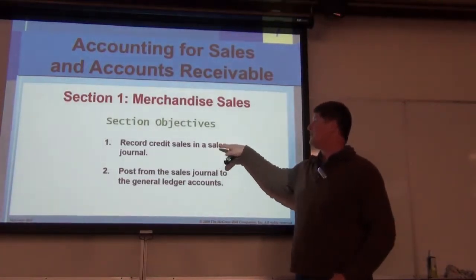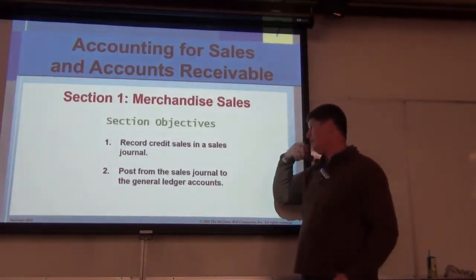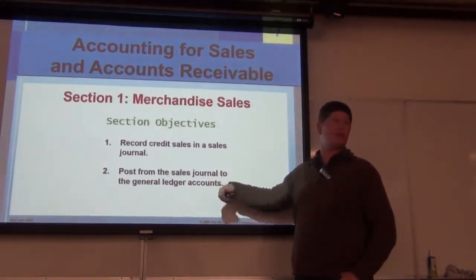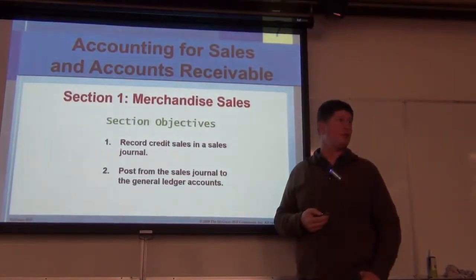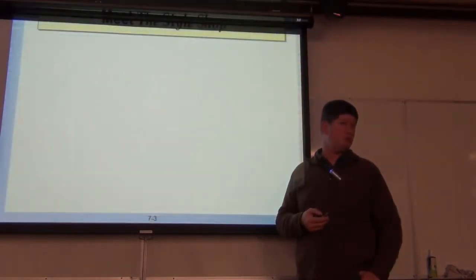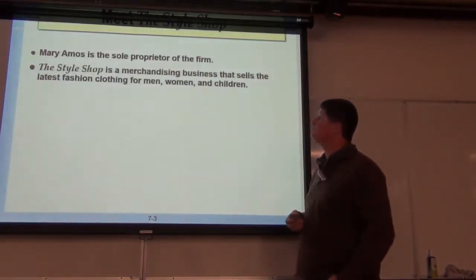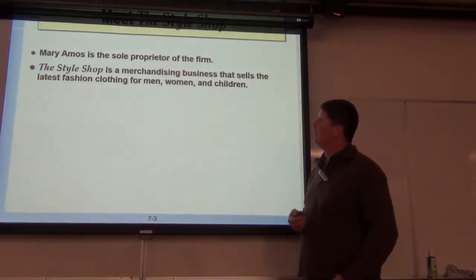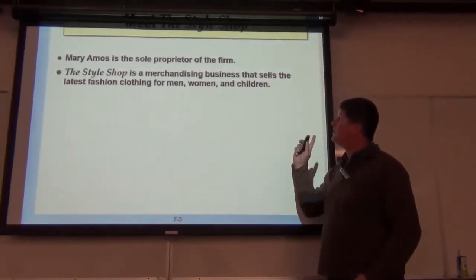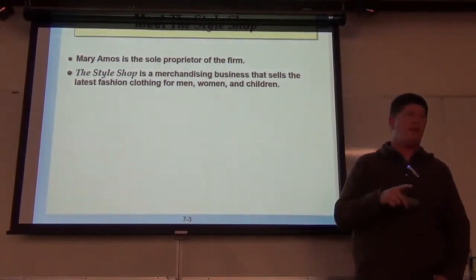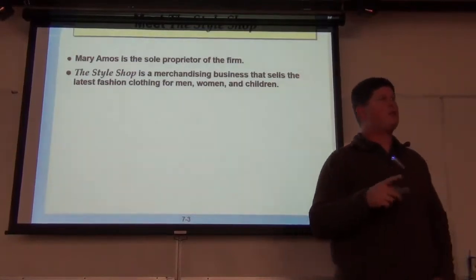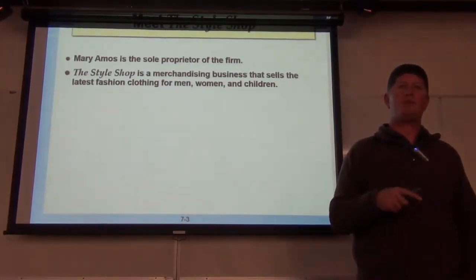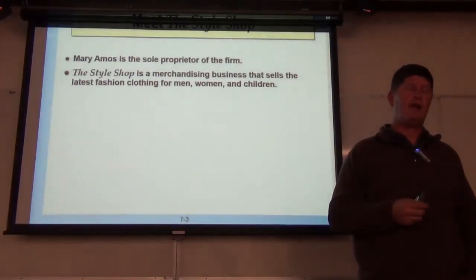We're going to create a sales journal and post from the sales journal straight to the general ledger, bypassing the general journal. Here's the example from the book—not very creative, but Mary Amos. We've got this company called The Style Shop. Here's the other transition we're going to make now that we're into Chapter 7, the second half of the class.